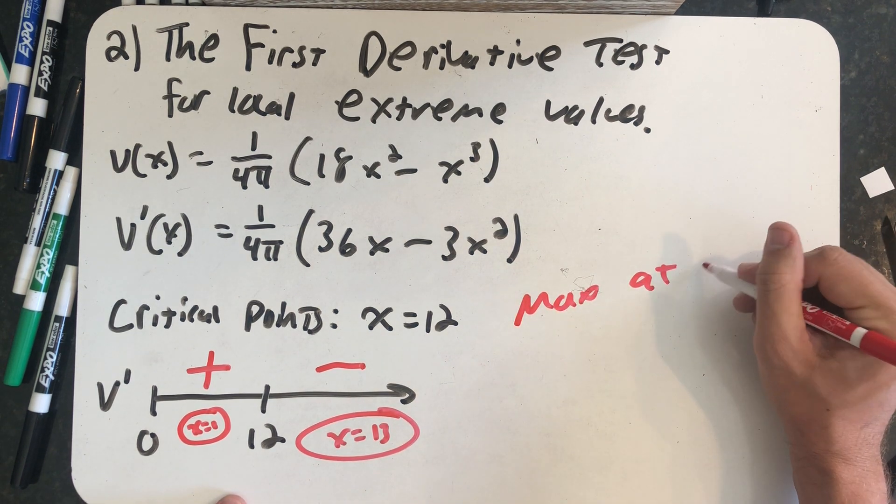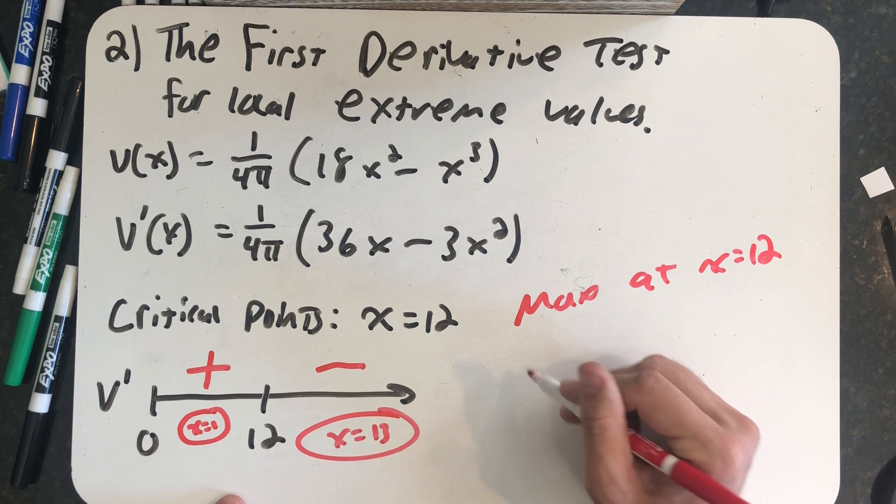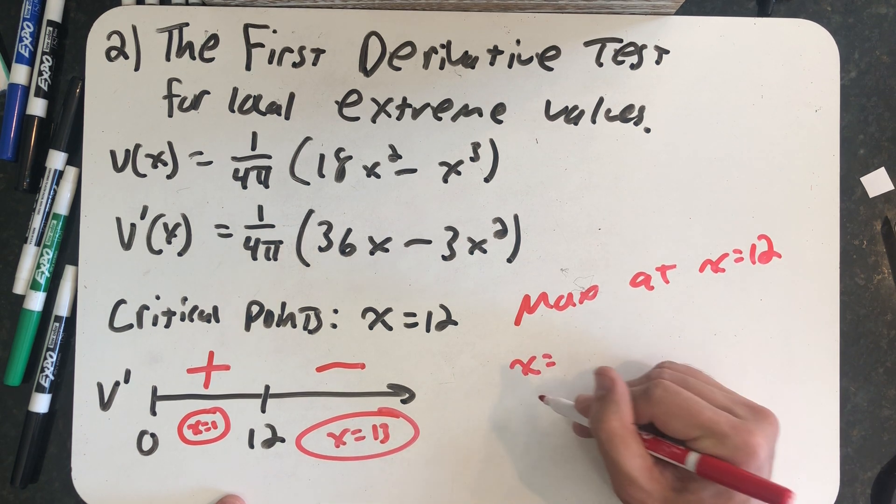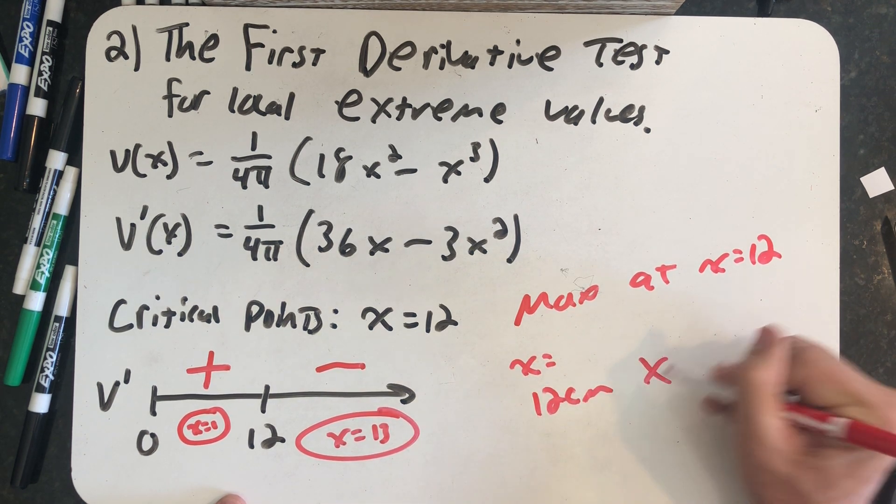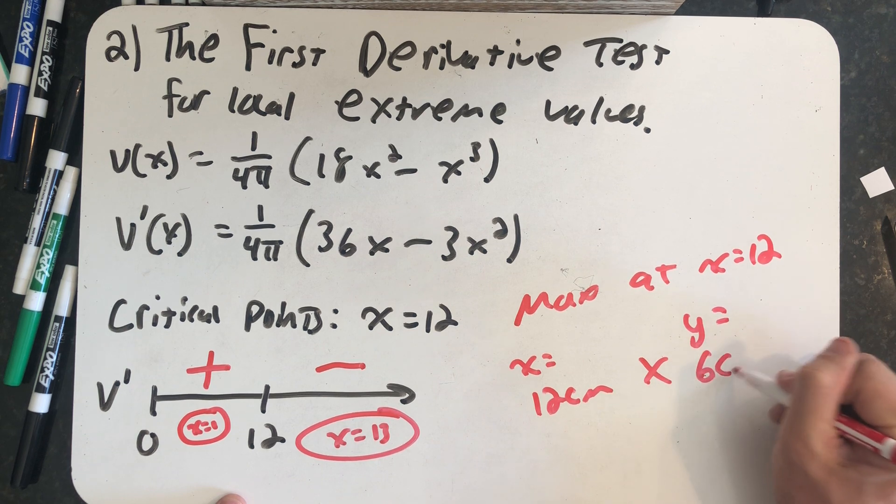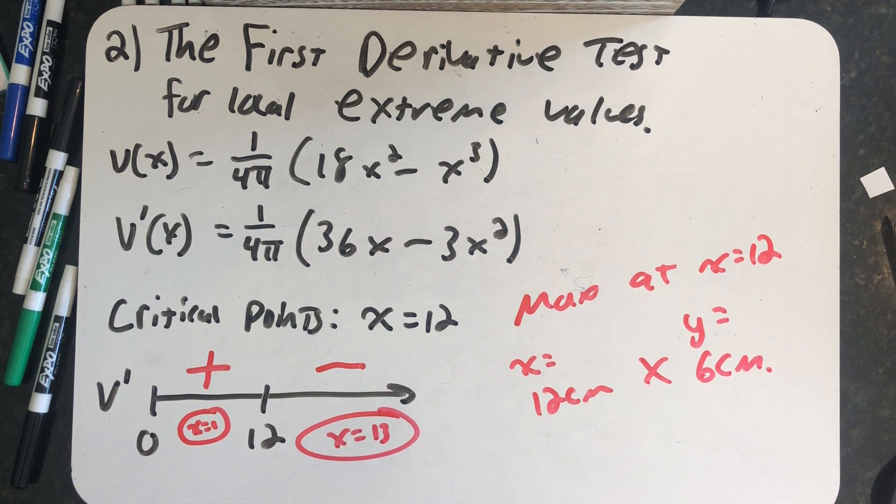So there is a maximum at x equals 12, making the dimensions x equals 12 centimeters by y equals 6 centimeters again, confirming what we saw in our first method.